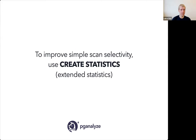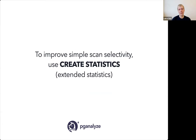There is a simple fix in modern Postgres: CREATE STATISTICS. Many of you have probably used this. If you have complex WHERE clauses with these kinds of dependencies between columns, CREATE STATISTICS helps Postgres understand the relationships between those columns, and through that provides a better selectivity estimate.